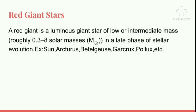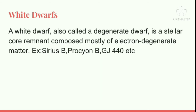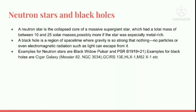Now we're going to talk about white dwarf stars. A white dwarf, also called a degenerate dwarf, is a stellar core remnant consisting mostly of electron-degenerate matter. Examples: Sirius B, Procyon B, GJ 440, etc.